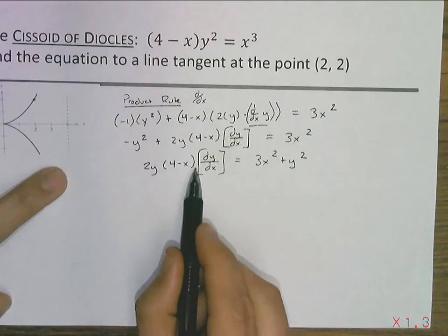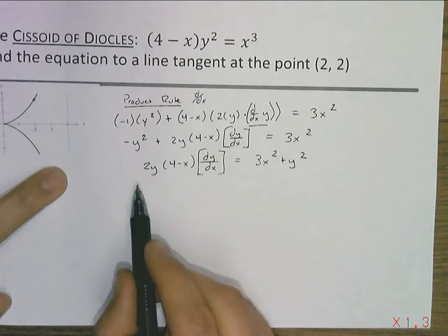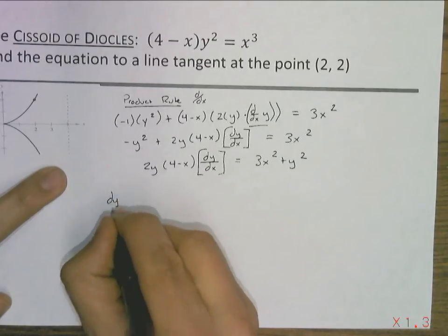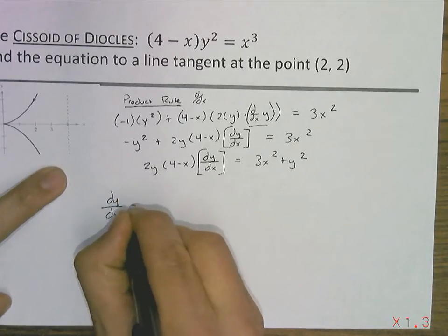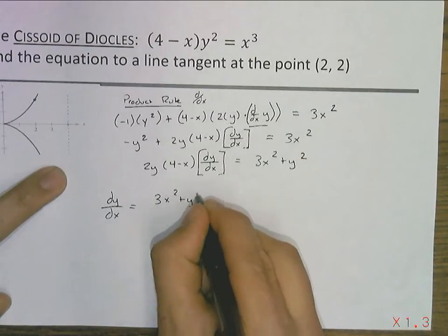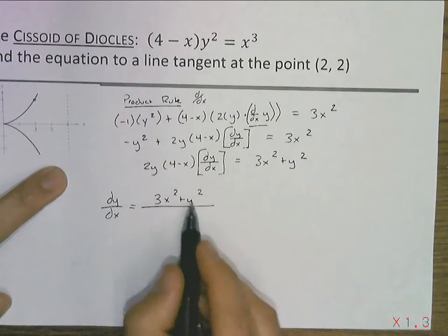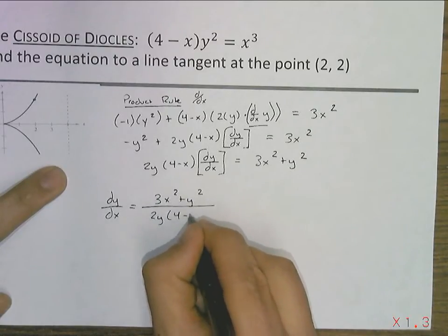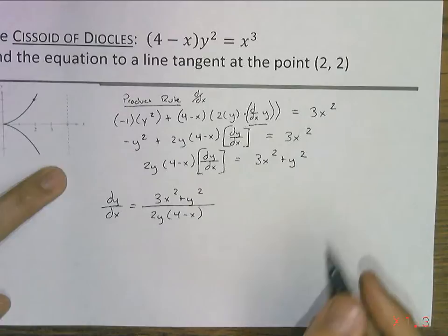And now, again, I've got this term. It's connected to all this stuff by multiplication. So, I'm going to divide both sides by all that stuff. And I'm going to get dy over dx is equal to, this stuff was already on the right-hand side, all over, we're dividing by that stuff.